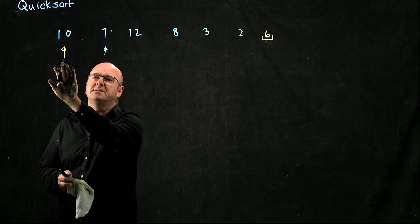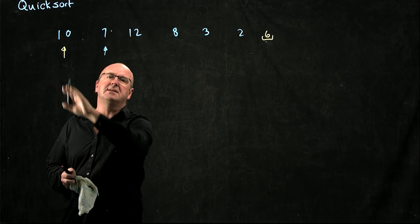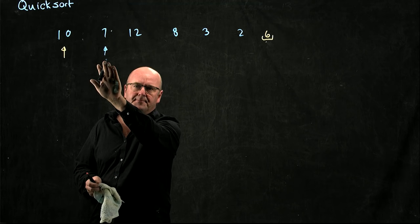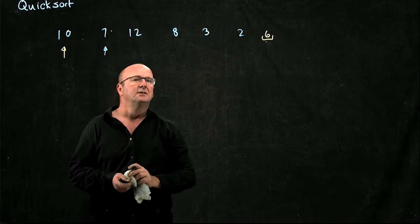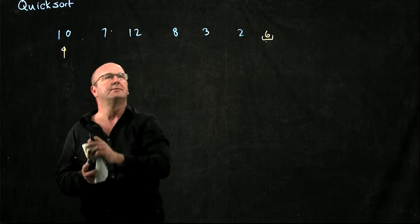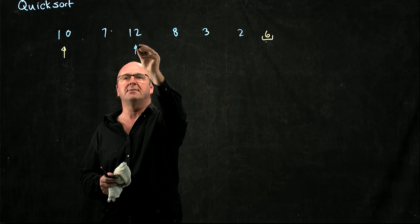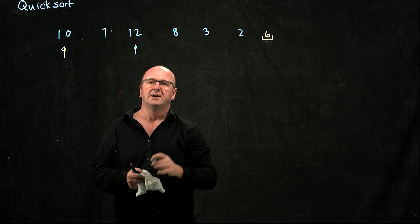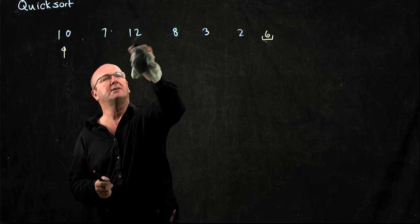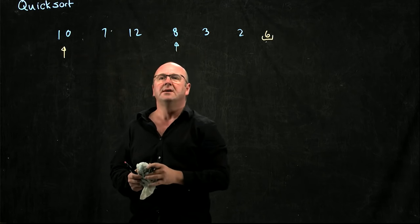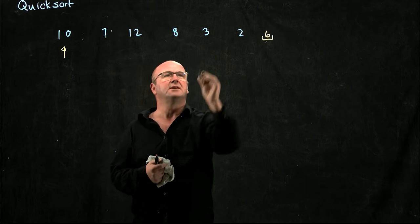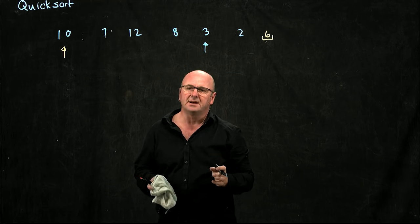This counter remembers where we are and where we're going. Is 7 smaller than 6 or larger? 7 is larger than 6, so we leave the first pointer where it is and increment our second counter. Is 12 larger than 6? Yes, so we increment our pointer. Is 8 larger than 6? Yes, we leave it and increment our pointer.